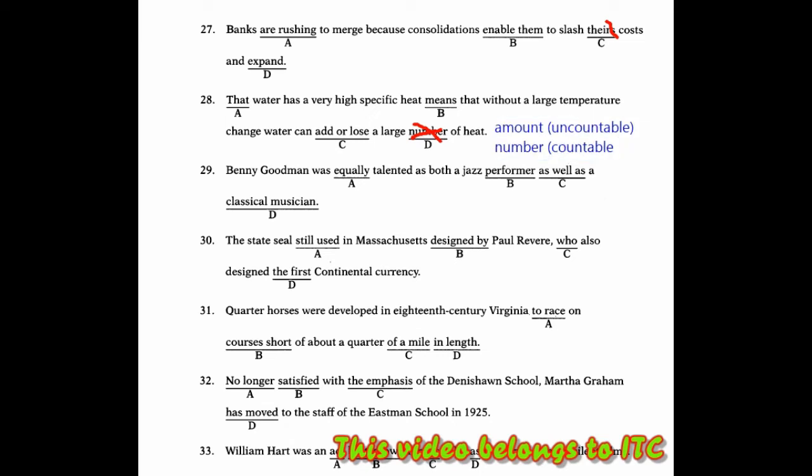For number 29, Benny Goodman was equally talented as both a jazz performer. Here it should be 'and' because the phrase is 'both' paired with 'and'. This is the use of correlating conjunction, the use of ellipsis, combining both with and.